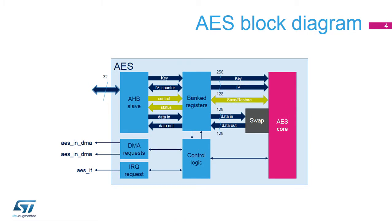Encrypting plaintext data into ciphertext and inversely decrypting ciphertext into plaintext requires intensive computing, which represents a huge workload when done entirely by software. The AES hardware accelerator lightens the CPU's workload by performing encryption and decryption operations in the AES core. The AES block is an AHB slave. Either the CPU passes the data, key and initialization vector to the AES block by writing to memory-mapped registers and gets the result by reading registers, or data movement can be ensured by two DMA channels.